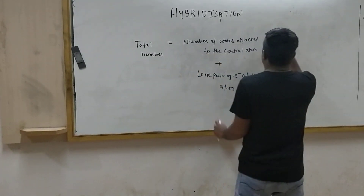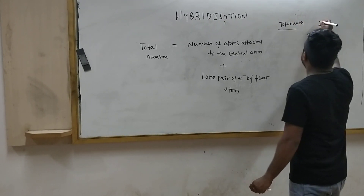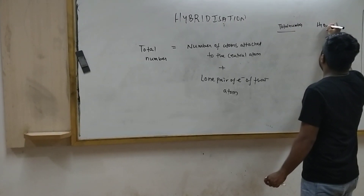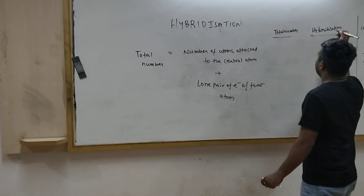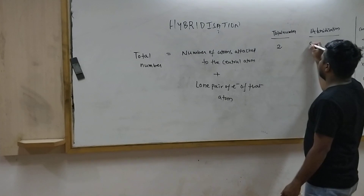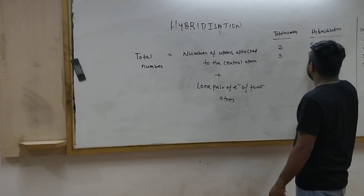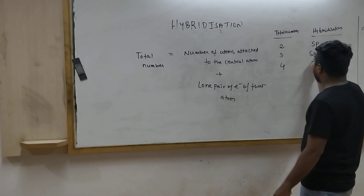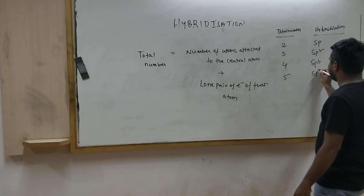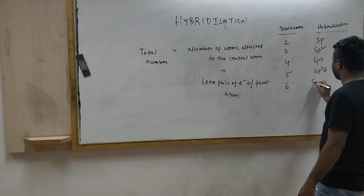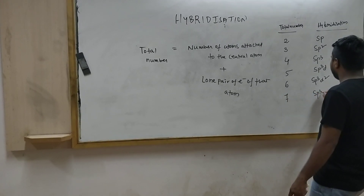If the total number is 2, hybridization is SP. If the total number is 3, hybridization is SP2. If 4, then SP3. If 5, then SP3D. If 6, then SP3D2. And if 7, then SP3D3.